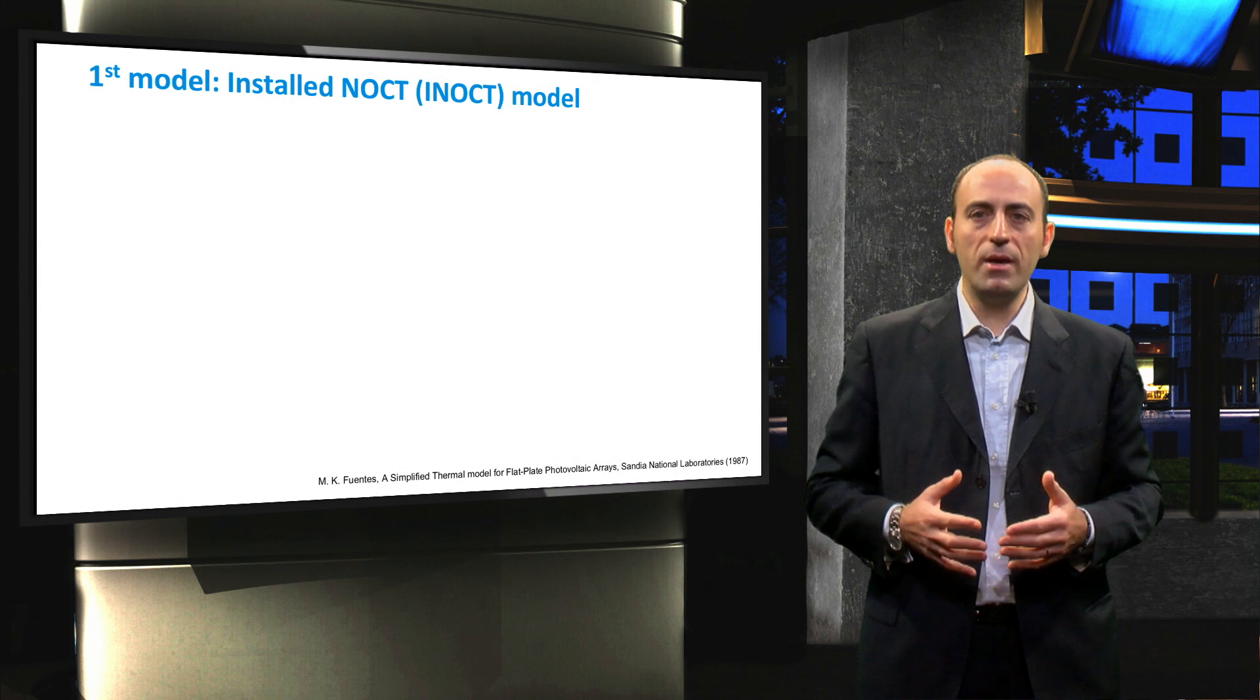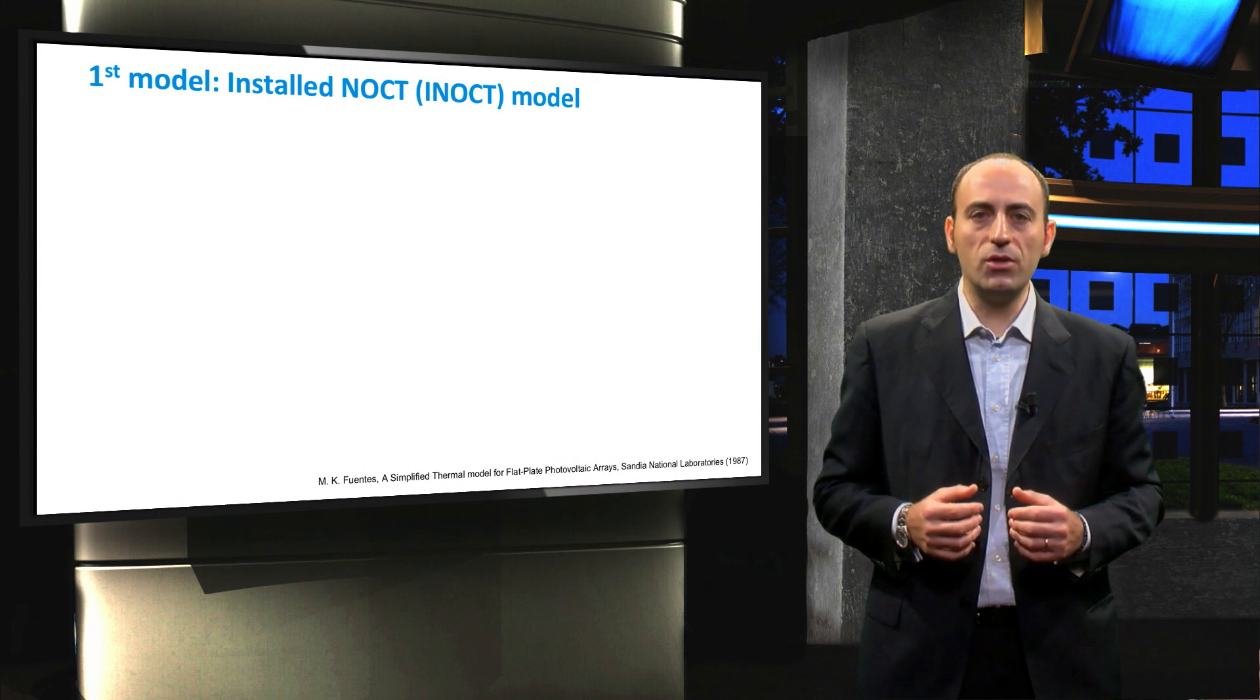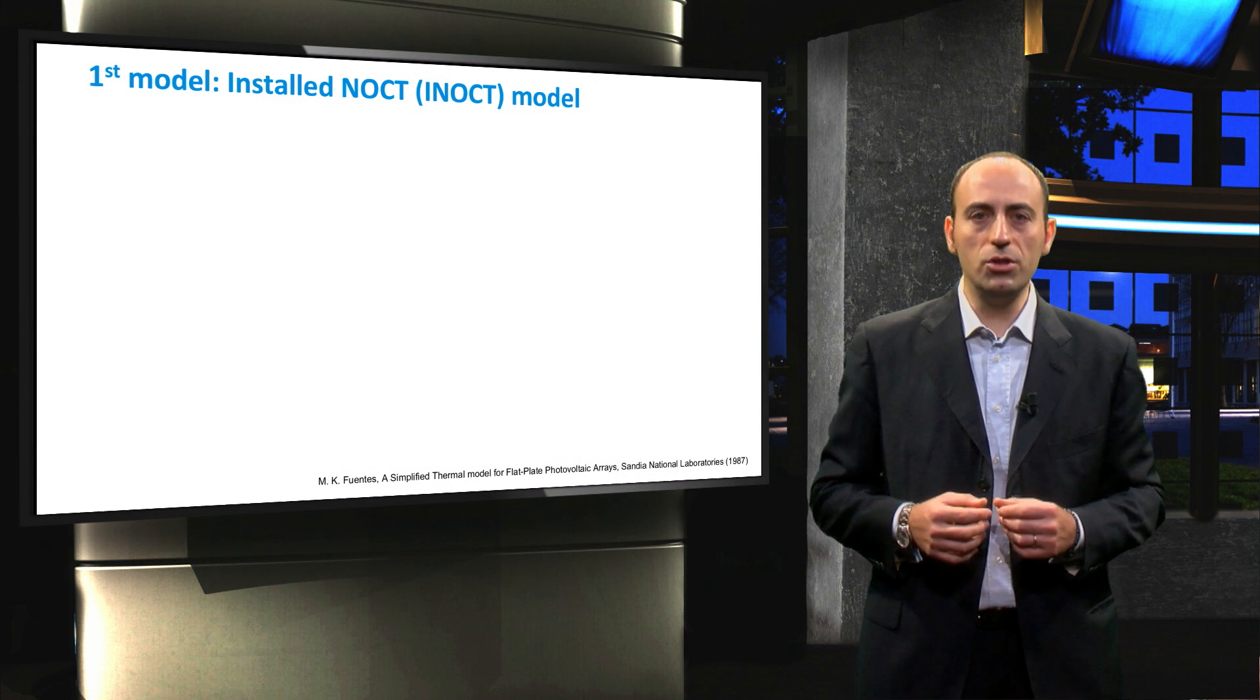This model is based on an estimation of the average cell temperature by means of the nominal operating condition temperature. As we have already seen, the NOCT is a parameter provided in the datasheet. However, in order to take into account the mounting configuration of the PV module, the installed nominal operating cell temperature was defined.